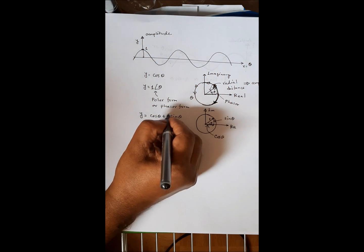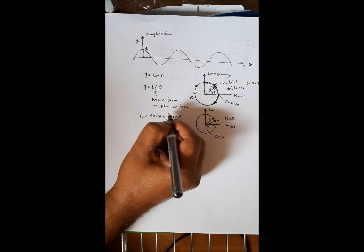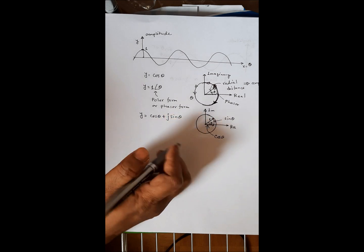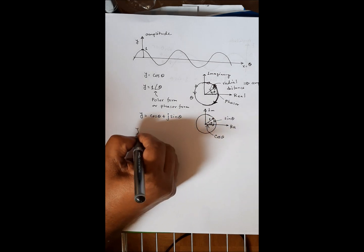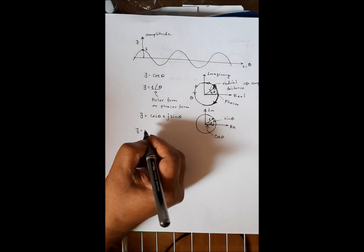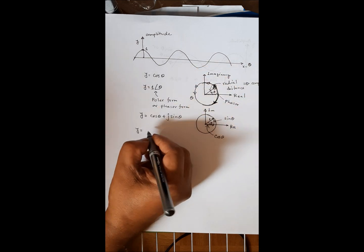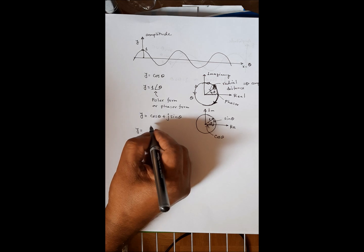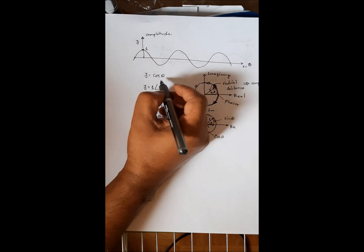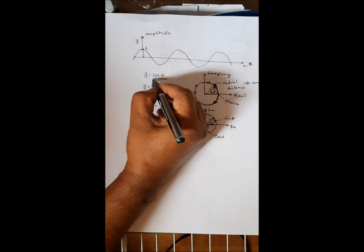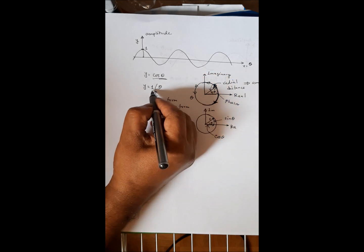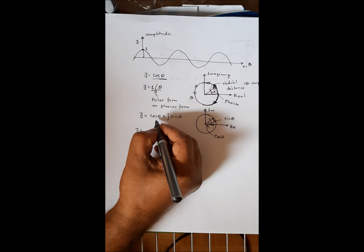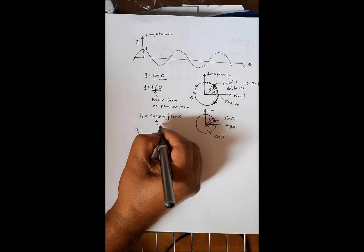We use j in engineering; in mathematics they use i. So here the sine(theta) component corresponds to y = cosine(theta), the original sinusoid. So you can write it in polar form as 1∠θ, and also in rectangular form — also called Cartesian form — as cosine(theta) + j·sin(theta).